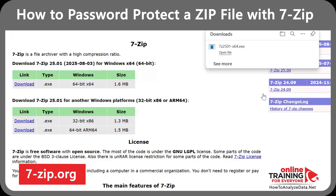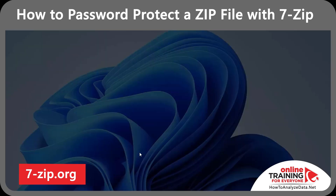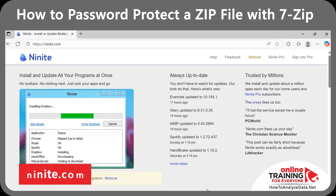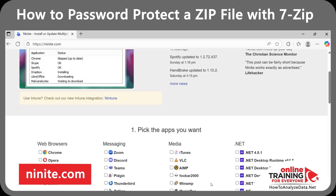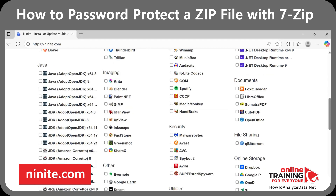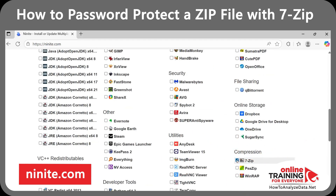Once the file is downloaded, you can complete the installation. You'll get a couple of warnings, but as long as you download the executable from 7-zip.org, you should be fine. You can also download 7-Zip from Ninite.com, which is designed to automate open source downloads.